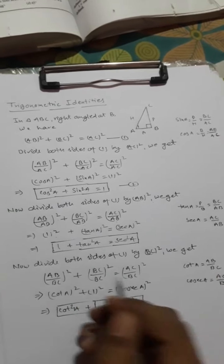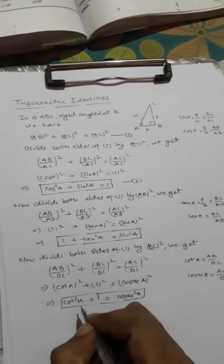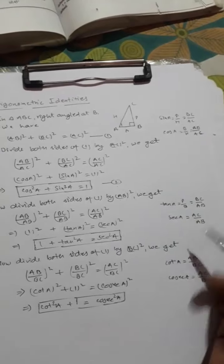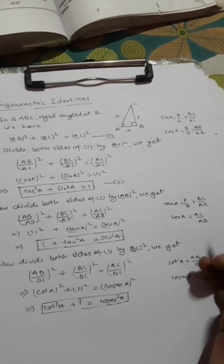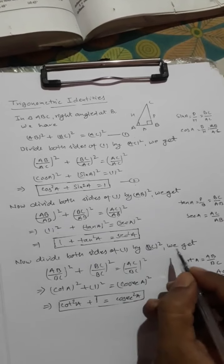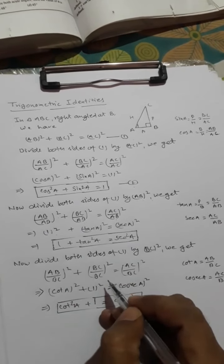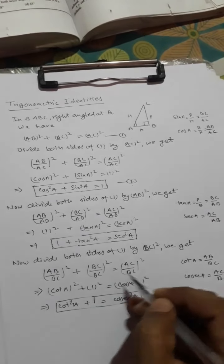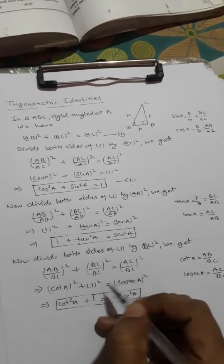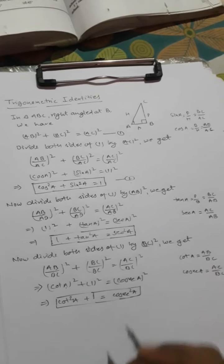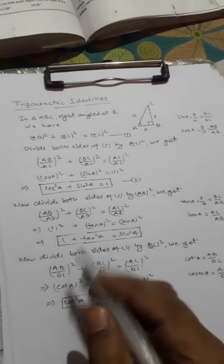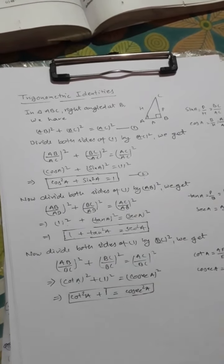For the third identity, our requirement is cot A and cosec A. For triangle ABC, cot A = AB upon BC, and cosec A = AC upon BC. We divide both sides of equation one by BC². We get (AB/BC)² + (BC/BC)² = (AC/BC)², which gives cot²a + 1 = cosec²a. This is our third trigonometric identity, proved by the geometrical method.